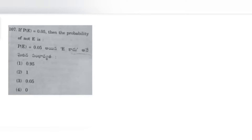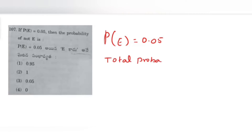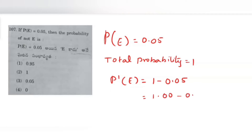Coming to question number 107: if the probability of E is 0.05, then the probability of not E is? Probability of E is given as 0.05. Total probability is always 1. So probability of not E — represented as P(E') — equals 1 minus 0.05. That is 1.00 minus 0.05, which on subtraction gives 0.95. The answer is option number 1.